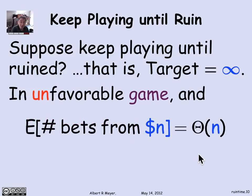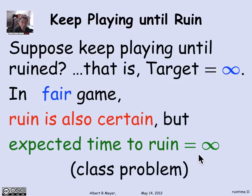If you analyze the recurrence and ask how long it takes starting with n dollars, the expected time to go broke is about proportional to n, your initial stake. What's weird is that in the fair game, ruin is also certain. But the expected time for ruin is infinite. So this is a wonderfully apparently contradictory situation.